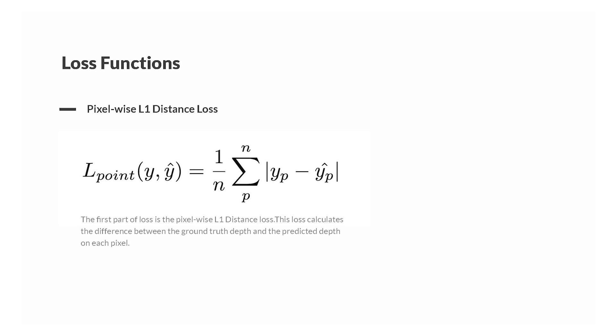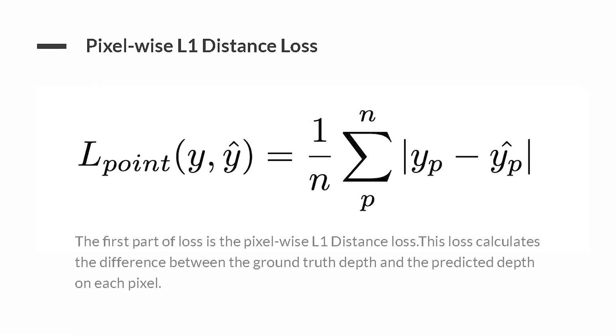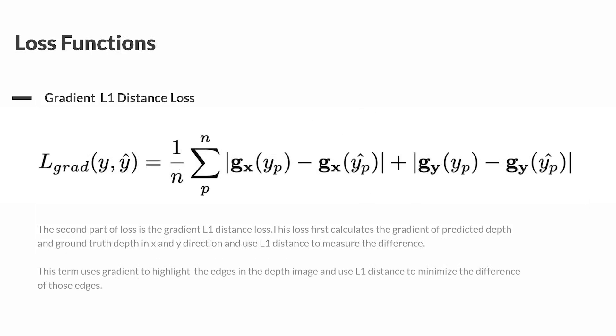Here, we introduce three loss functions for depth estimation. The first one is pixelwise L1 loss. This loss calculates the average L1 distance between the predicted depth and ground truth depth in pixel.